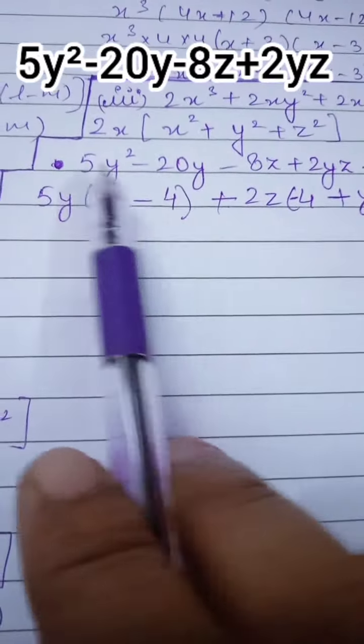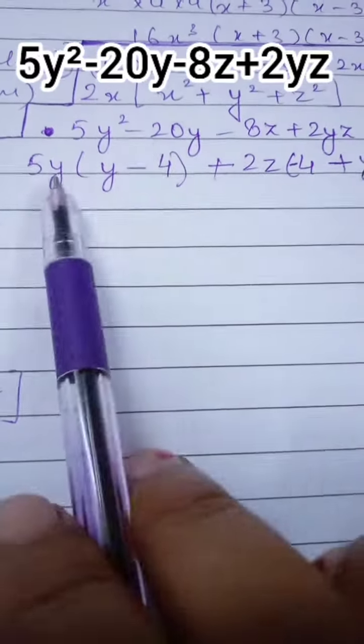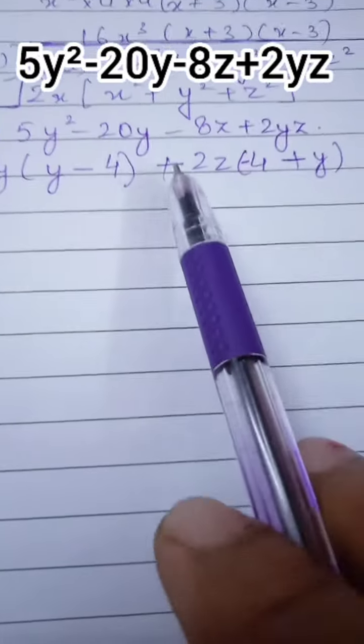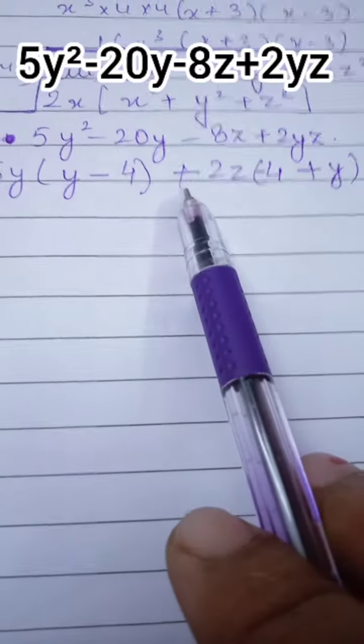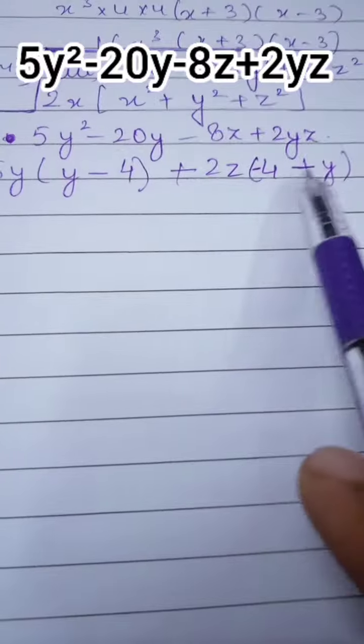So there is one remaining y, and for 20 it's minus 4. So we have y minus 4, and 5y is already outside the bracket. Now take 2z common. Don't take minus 2z common, because here we want y minus 4.